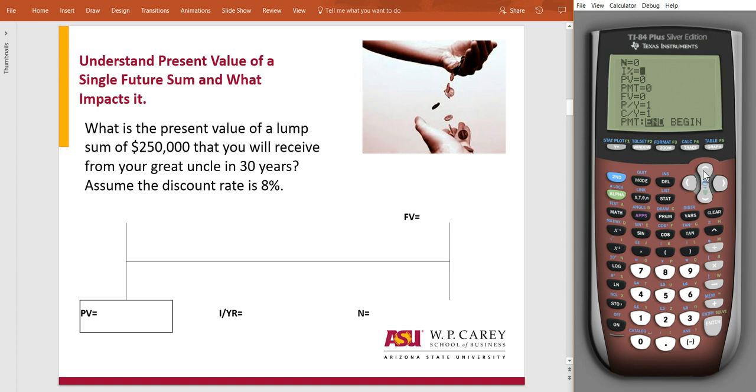What is the present value, the dead giveaway PV, of a lump sum, so that's just a one-time amount of money, of $250,000 that you will receive from your great uncle in 30 years, assuming the discount rate is 8%.